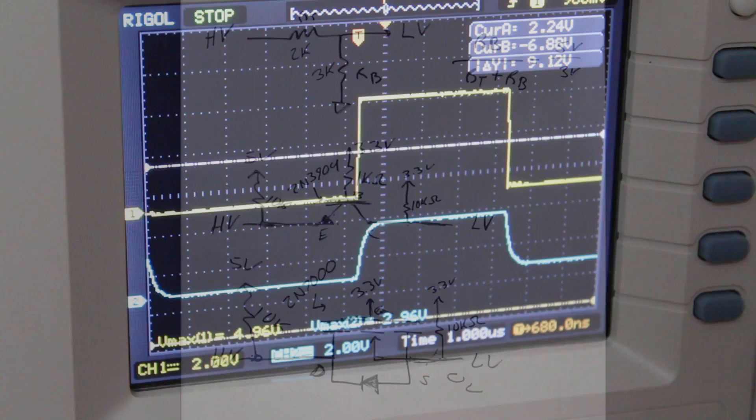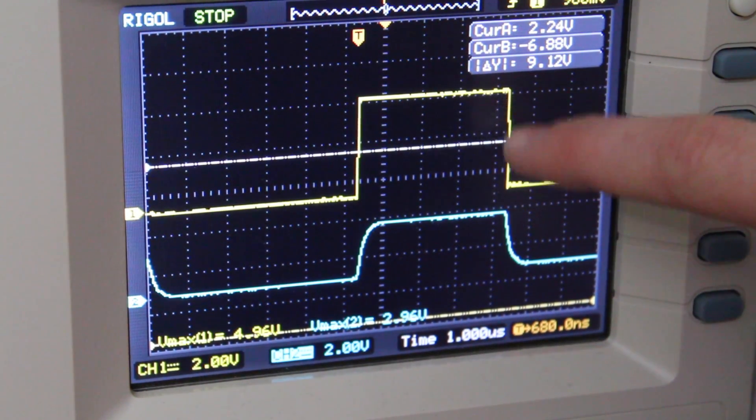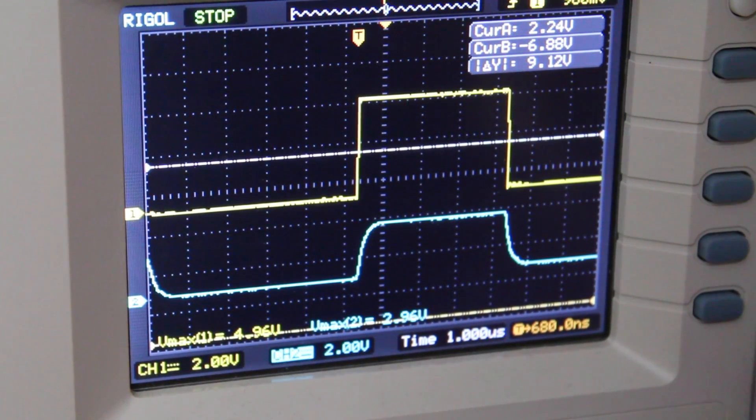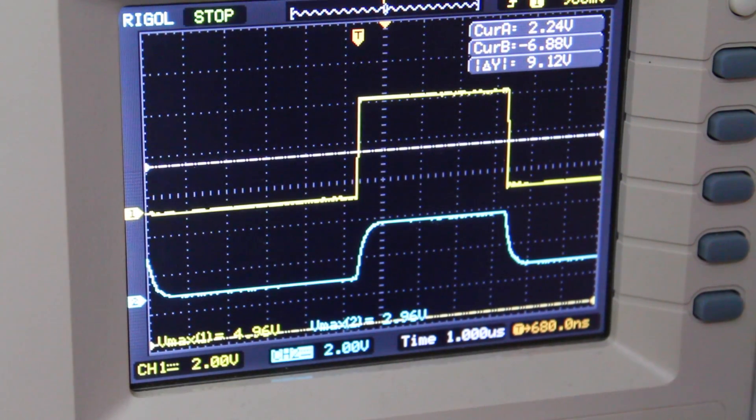The first circuit we're going to look at is the resistor divider method. On the scope here, the first channel, the top one, is the input signal. The bottom, channel 2, is the output. You can see the rise time and fall time are kind of weak, but it does appear to be working at 125 kilohertz.